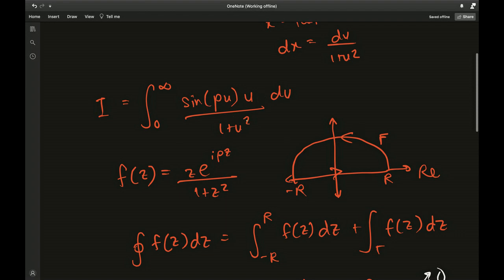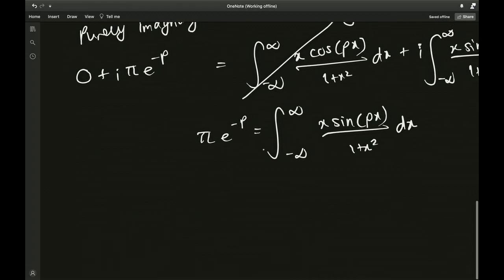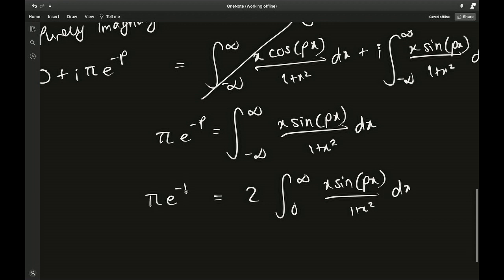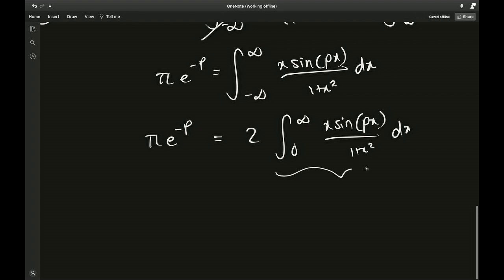How does that compare with our original problem? Well, you may notice that sine is odd, simple linear is odd, odd times odd is an even function, and the denominator is already even. So this can be expressed as two times integral from zero to infinity x times sine of px over 1 plus x squared dx equals pi times e to the negative p. This guy apart from the two is I, so 2I equals pi times e to the negative p. Therefore I equals pi over 2 times e to the negative p.